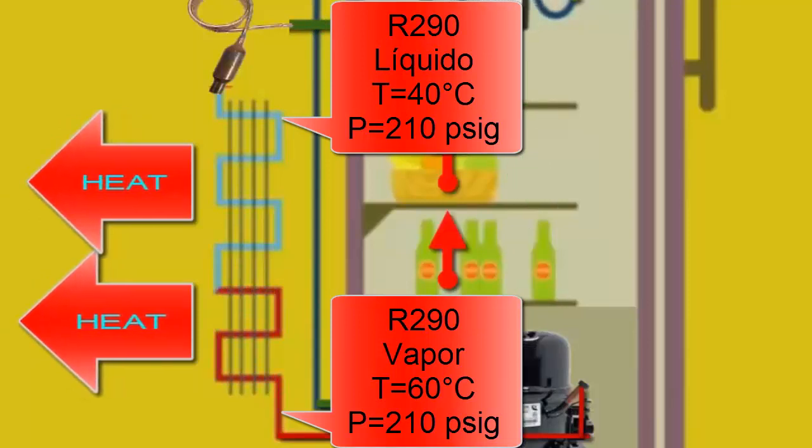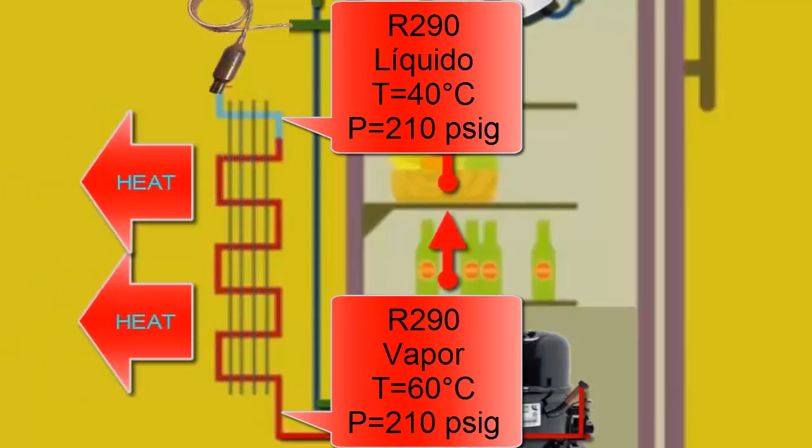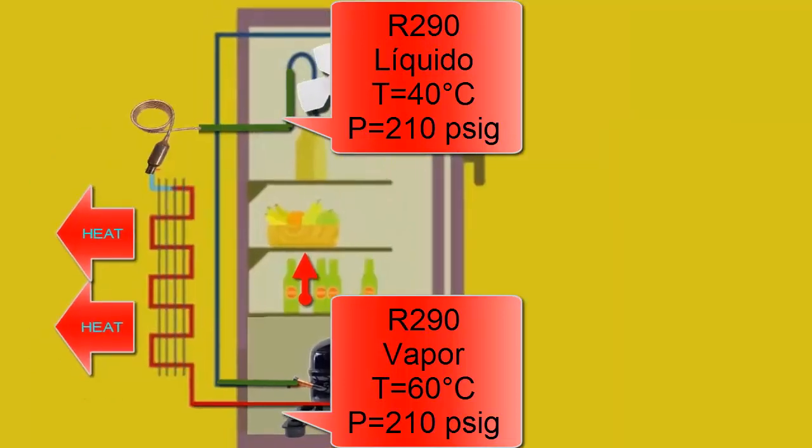This temperature decrease of the R290 in the condenser allows the refrigerant to transition from a vapor to a liquid state.